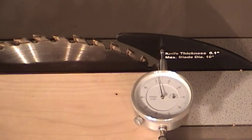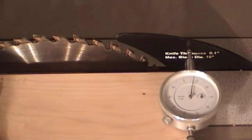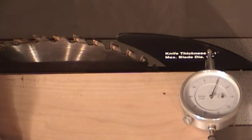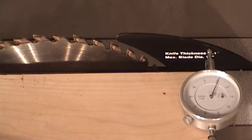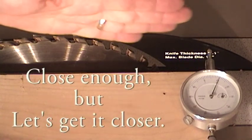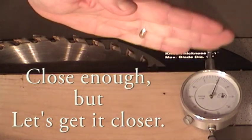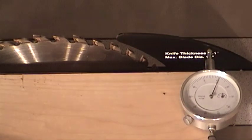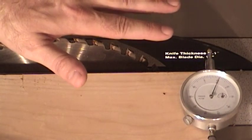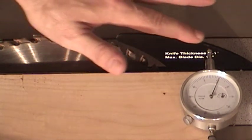But as I push it towards the rear of the riving knife it gets even worse. And towards the rear of the riving knife it's off by ten thou in this direction. So my riving knife is actually twisted a little bit this way. So I'm going to need to straighten this out in order to get a perfectly aligned riving knife.